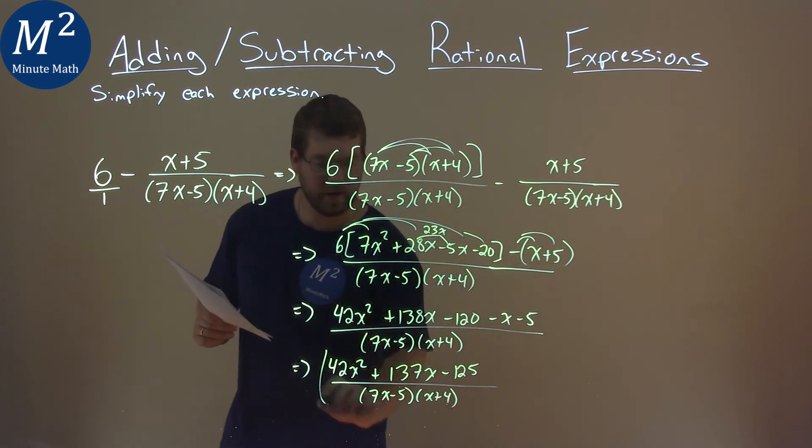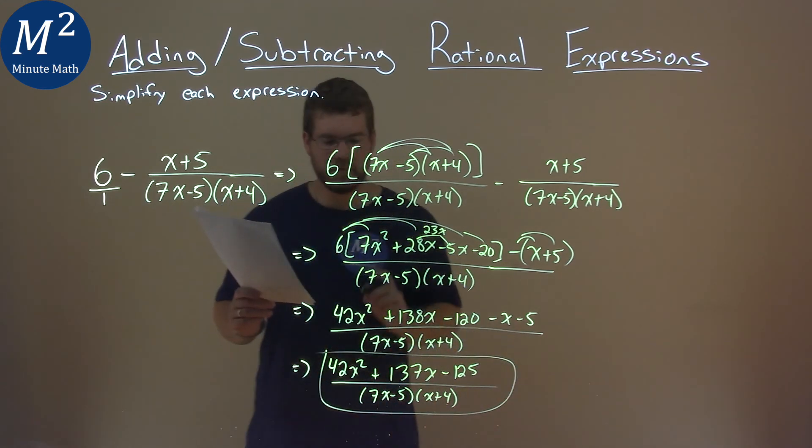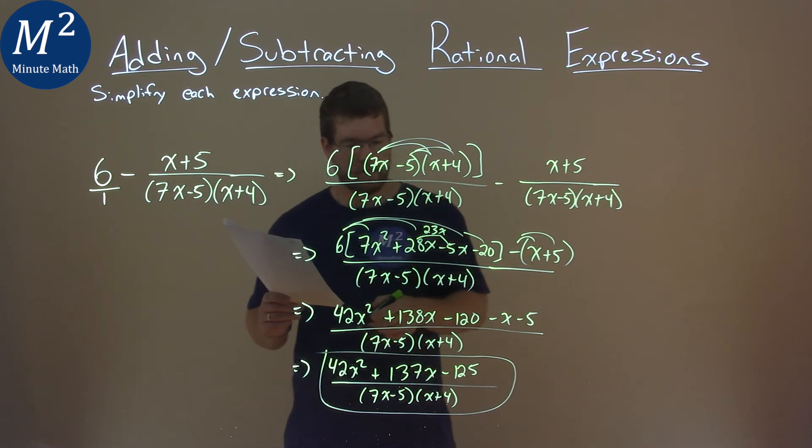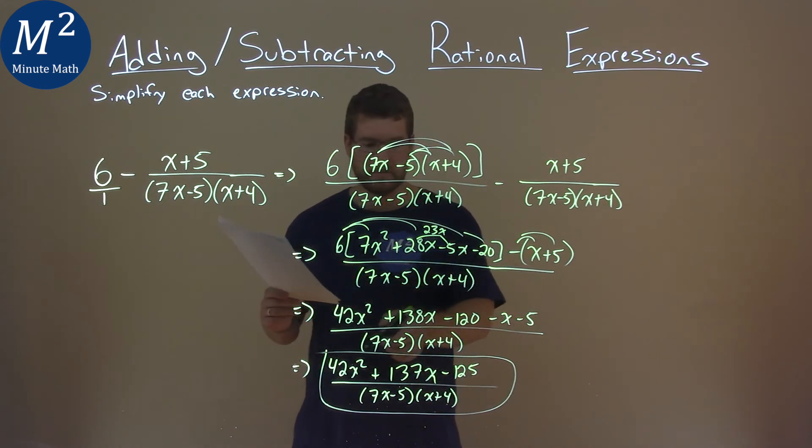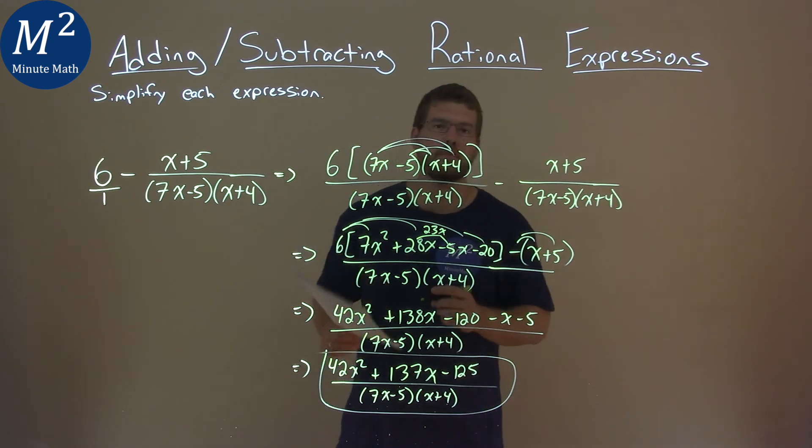And so our final answer here, after all that, is 42x squared plus 137x minus 125 over 7x minus 5 times x plus 4.